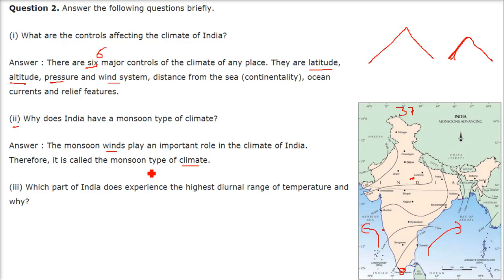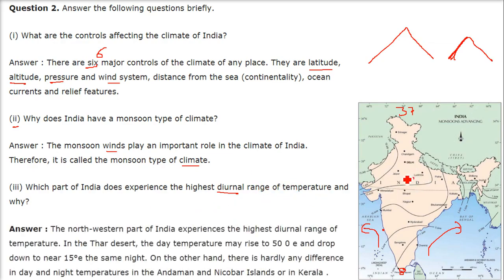Which part of India experiences the highest diurnal range of temperature, and why? Diurnal means day and night temperature difference. The northwestern part of India, specifically the Thar Desert area, experiences the highest diurnal range. The temperature rises to 50 degrees centigrade in the daytime and drops to 15 degrees on the same night — a difference of around 35 degrees. This is the diurnal temperature range.